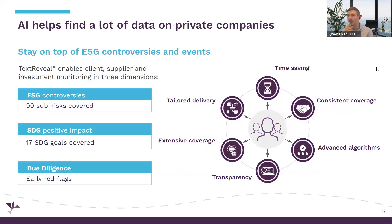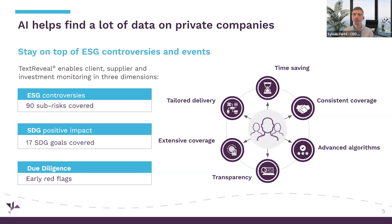Let's dive into the use cases. We're going to look at three tangible examples analyzing individual companies in different dimensions. The first is ESG controversies — a private equity firm doing initial diligence to ensure a company fits their ESG strategy, or a private equity or credit firm tracking their portfolio in real time. These cover negative events with regulatory aspects, typical for Article 8 funds where there is a need to monitor that companies do no significant harm.